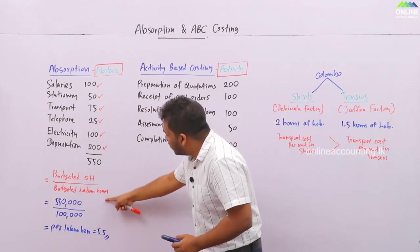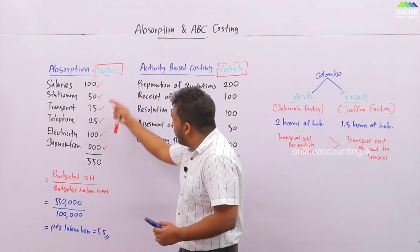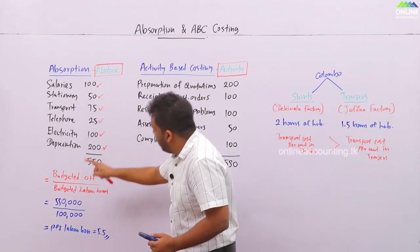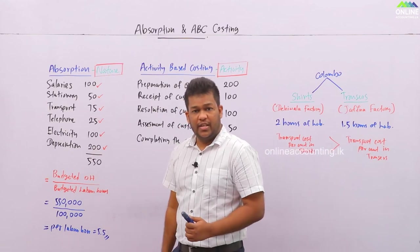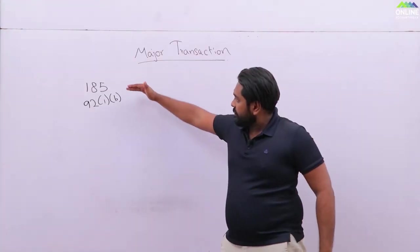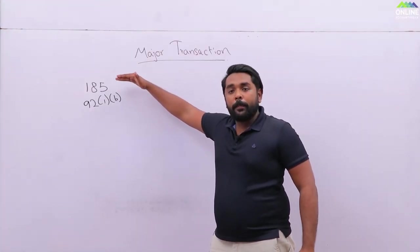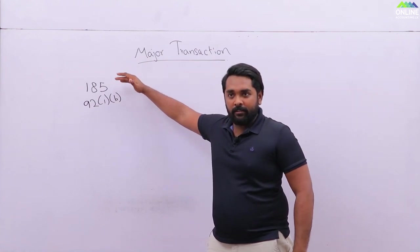You have to tell the clear reason. In absorption costing, we allocate all the possible costs based on one basis. Since we are doing this, it would tell you about the particulars of a major transaction.